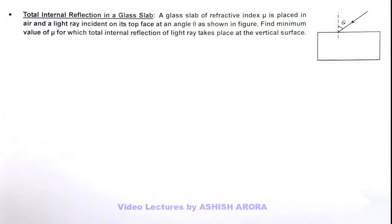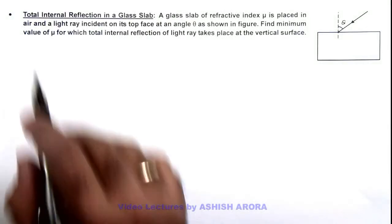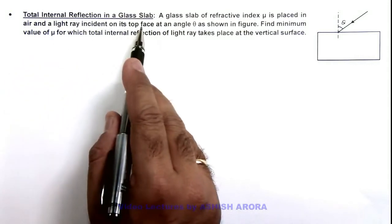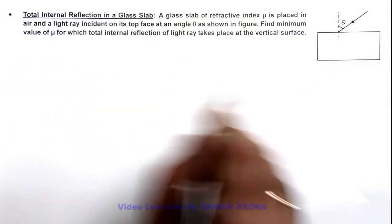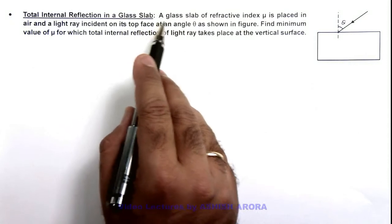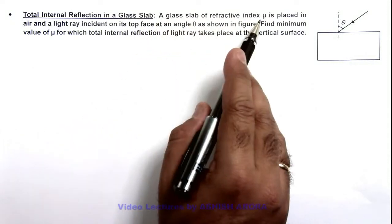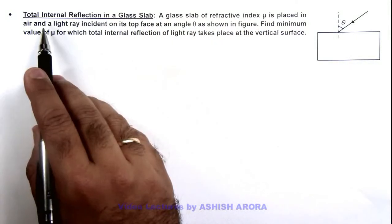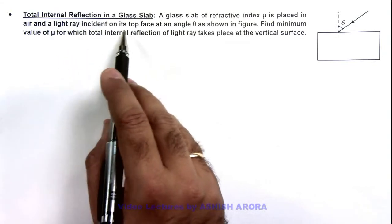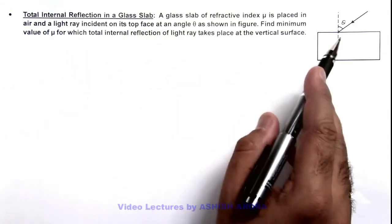In this illustration, we'll demonstrate the total internal reflection in a glass slab. Here it is shown that a glass slab of refractive index mu is placed in air, and a light ray incident on its top face at an angle theta as shown in figure.